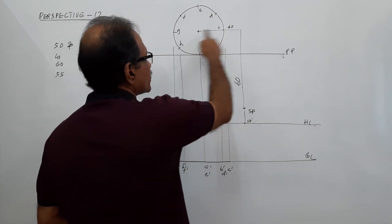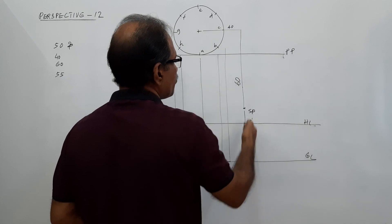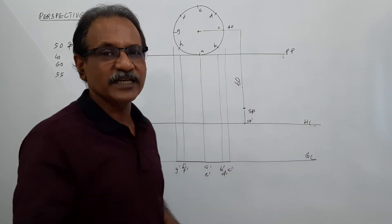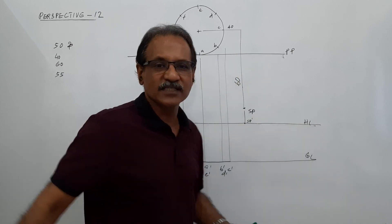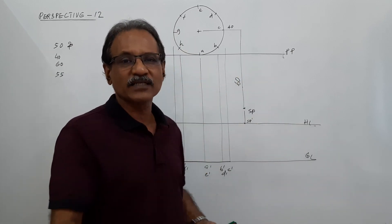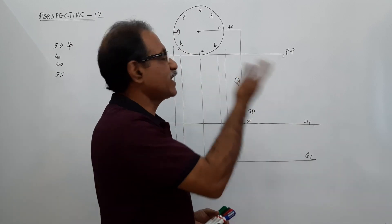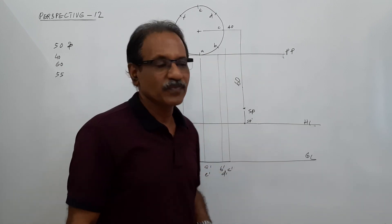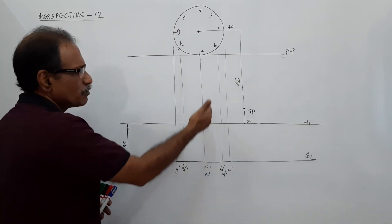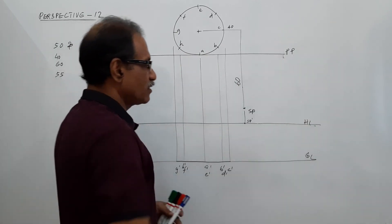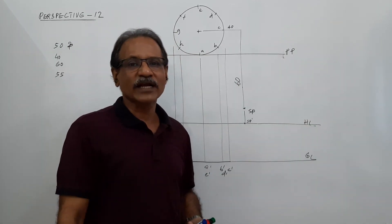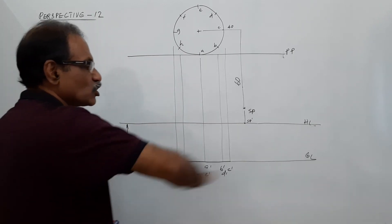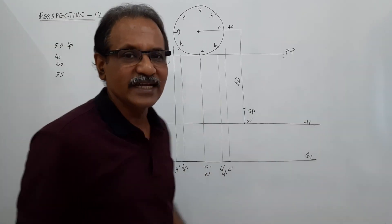Draw the center plane 40 mm away and 60 mm in front, then locate SP — the station point. The question says SP is 60 mm in front of PP and the CP passes through 40 mm to the right of the center of the lamina. At any distance below SP, draw HL — the horizon line. Then on the observer side, 55 mm below HL, draw GL — the ground line.